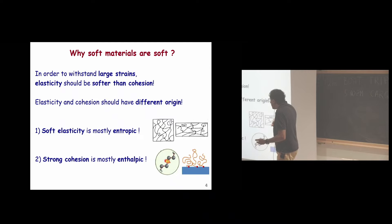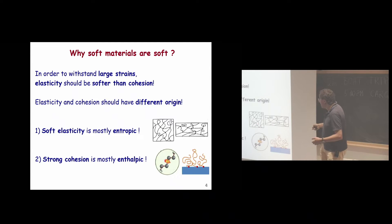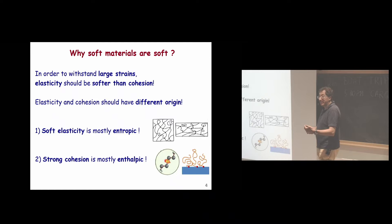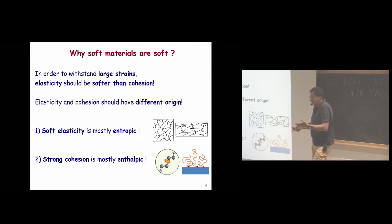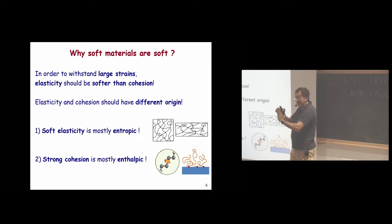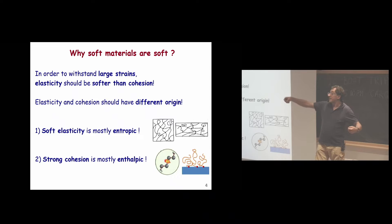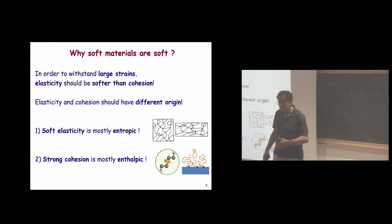We need elasticity and cohesion to have different origins. Cohesion must remain stiff — it stays mostly enthalpic because in the end we still break covalent bonds or separate van der Waals interactions. The van der Waals interaction between two solids is the same whether the solid is stiff or soft. But when you try to stretch with entropic elasticity, it can be much softer than cohesion, allowing very large stretches before breaking.